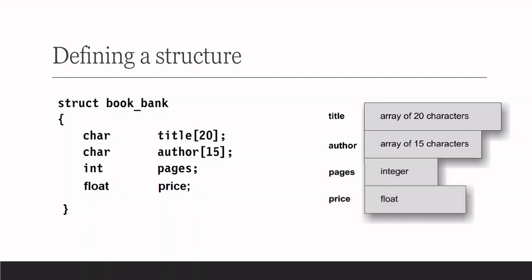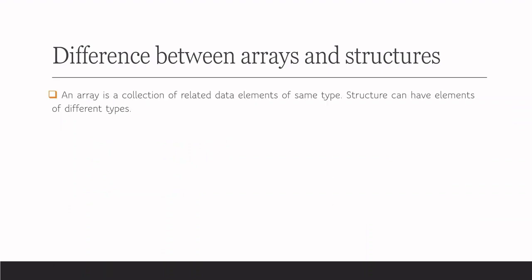Now, what is the difference between array and structure? Array is a collection of related data elements of the same data type, whereas a structure can have elements of the same as well as different data types. Array is a derived data type whereas structure is a programmer-defined data type, because integer array, float array are already specified — they are derived data types, not defined by the programmer — whereas structure is defined by the programmer.